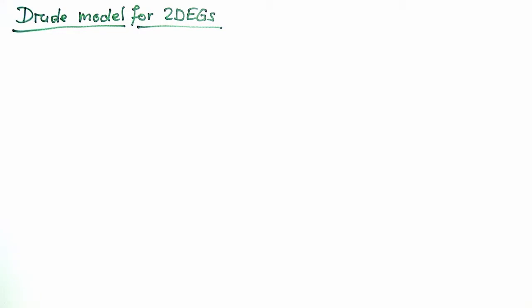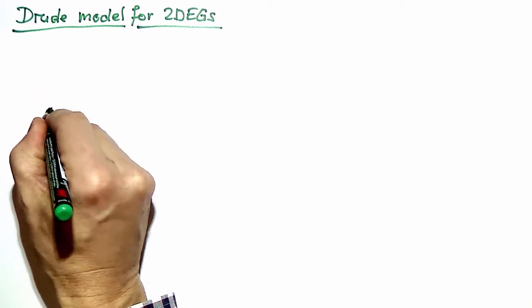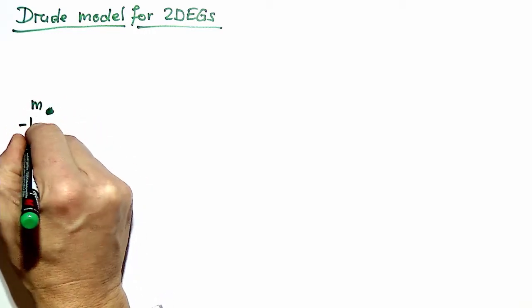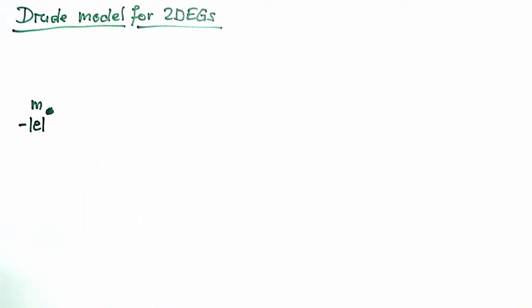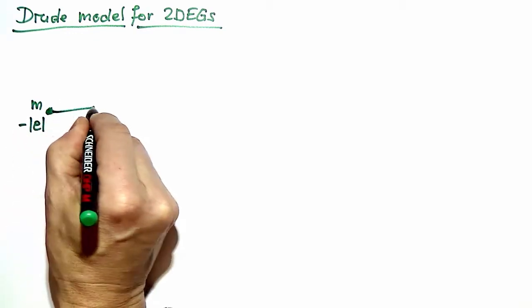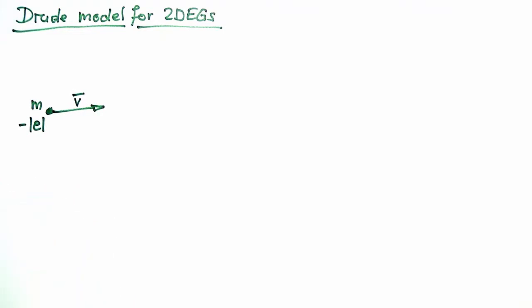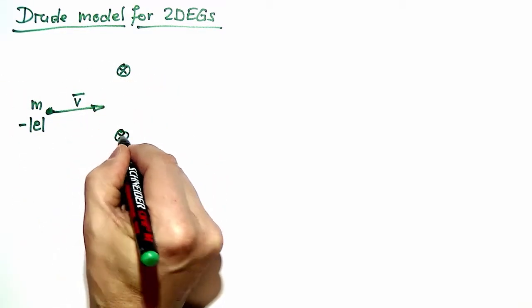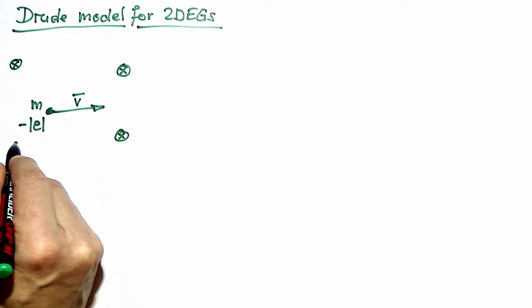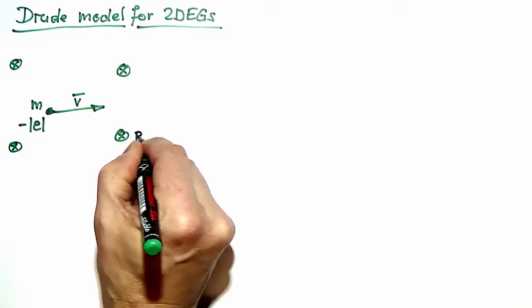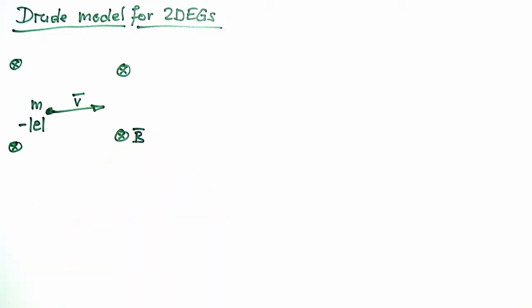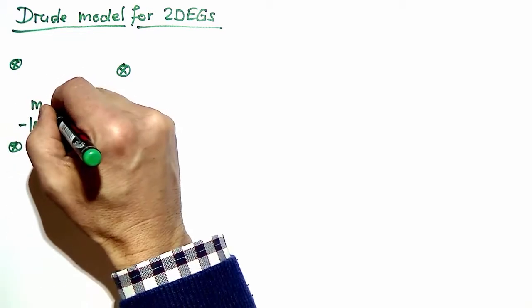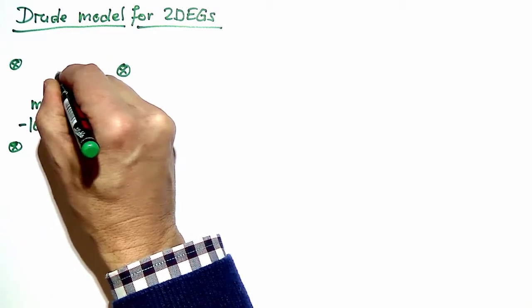We consider individual electrons having a mass m and a charge minus e, moving in the plane of the 2D electron gas with velocity v. These electrons are subject to a magnetic field oriented perpendicular to the plane of the electron gas, which we denote by B, and an electric field acting in the plane of the electron gas in some direction still to be determined.